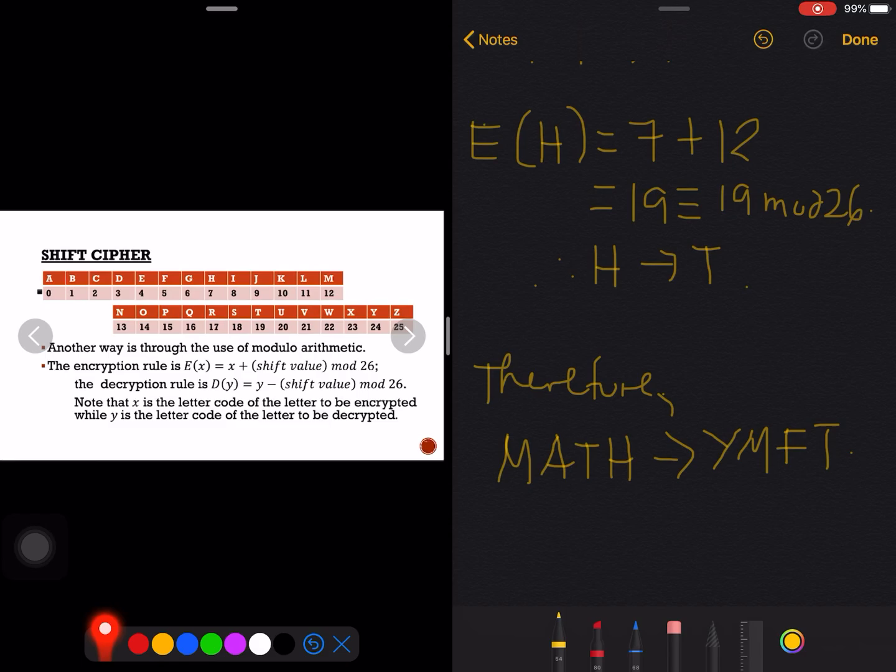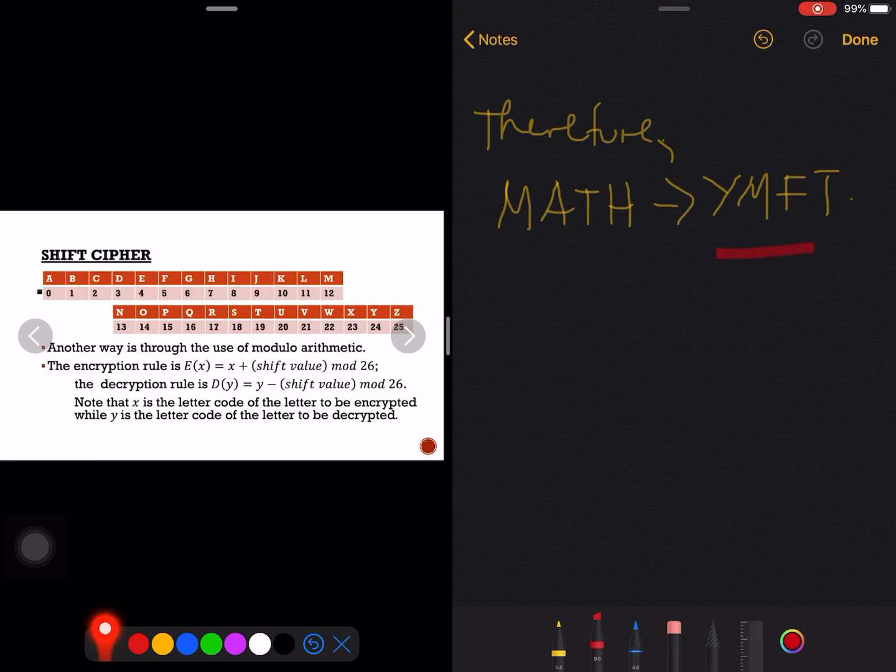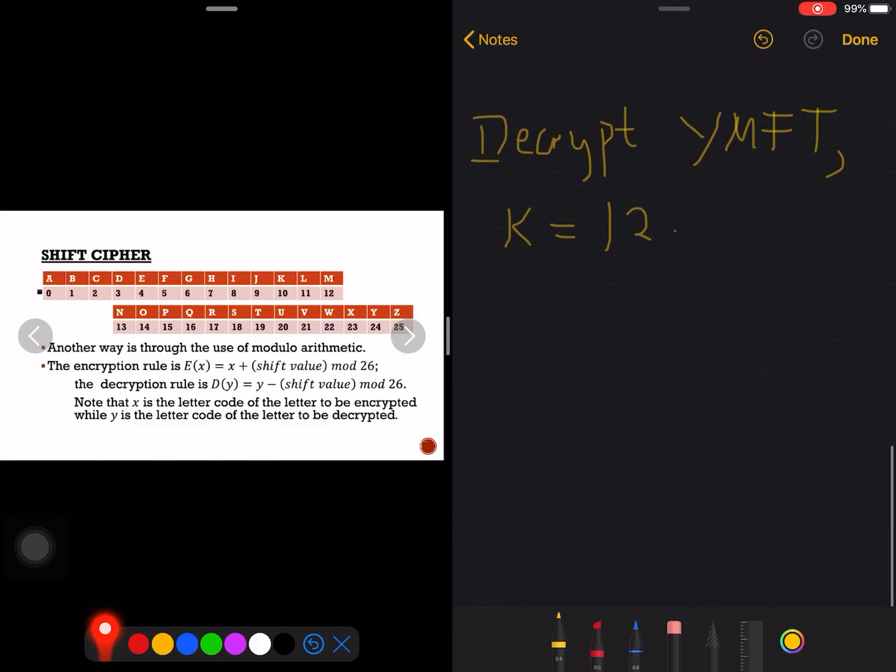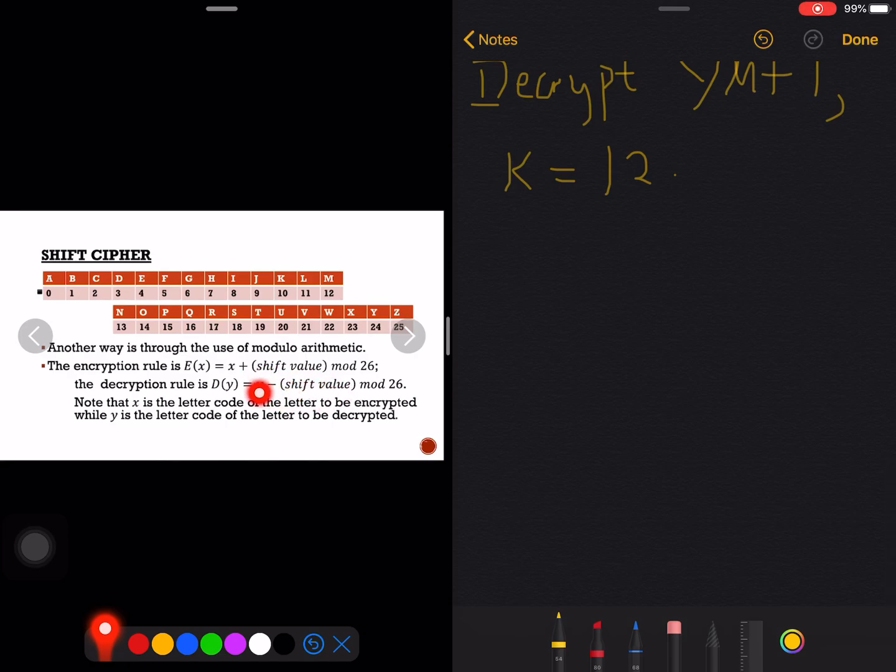Now how about decrypting this time? What if the given cipher text would be Y M F T? So what if this time we are to decrypt Y M F T? And of course when you are to decrypt, you have to use the same key. So the key should also be given when you are to decrypt. The key there would be 12. If you are to use different key, then you cannot retrieve the original message there.